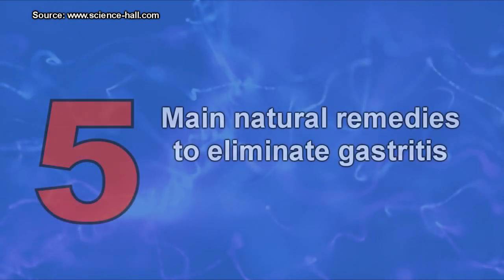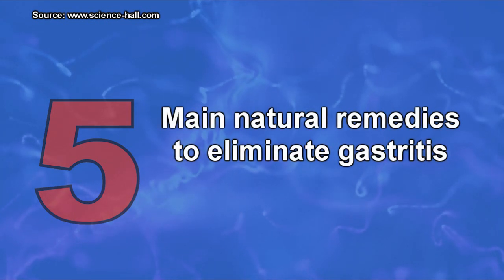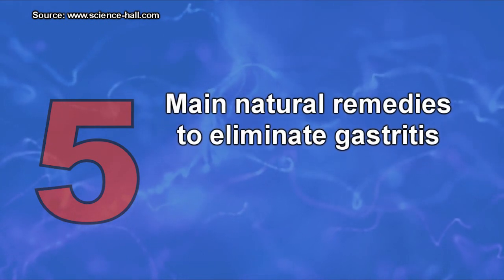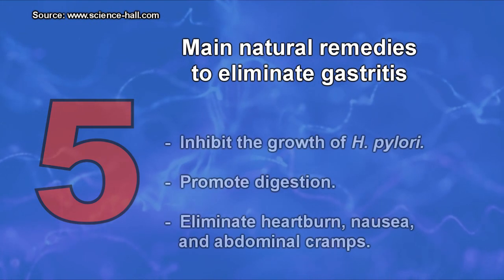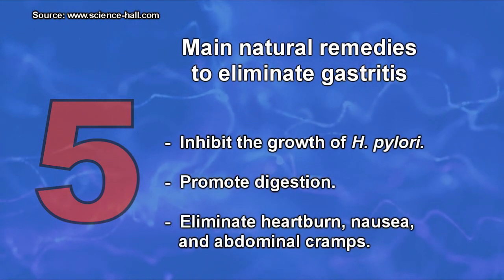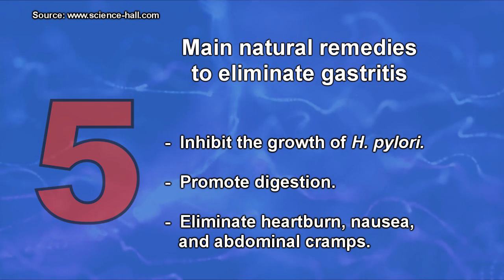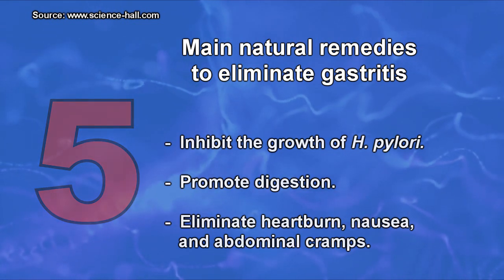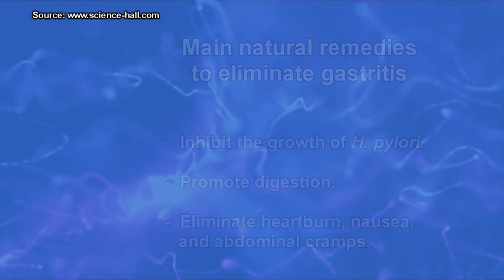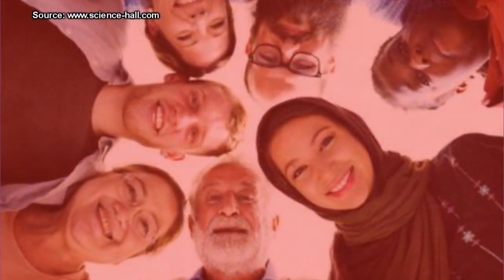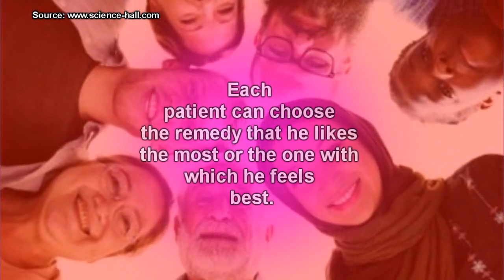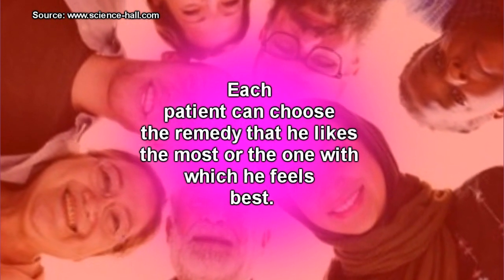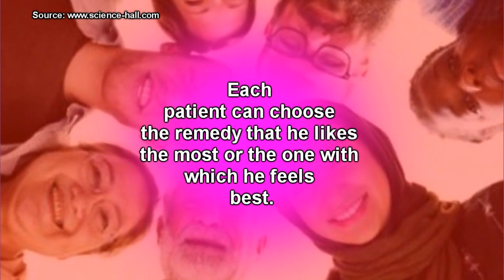The five main natural remedies to eliminate gastritis have several qualities: they inhibit the growth of Helicobacter pylori, promote digestion, and eliminate heartburn, nausea, and abdominal cramps. Due to the particular characteristics of people, the therapeutic response to these remedies may differ. Therefore, each patient can choose the remedy that suits them best.